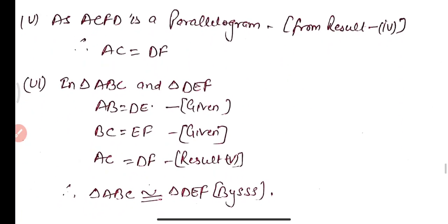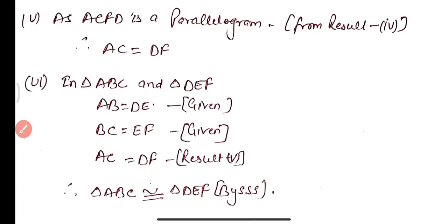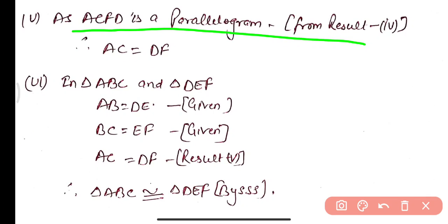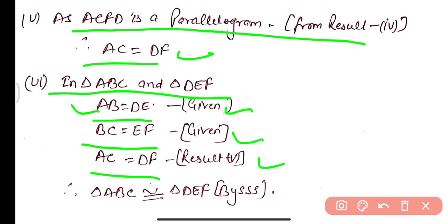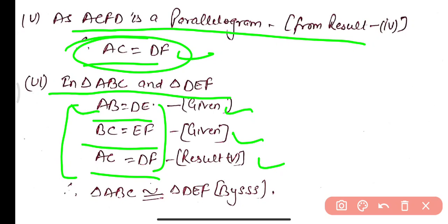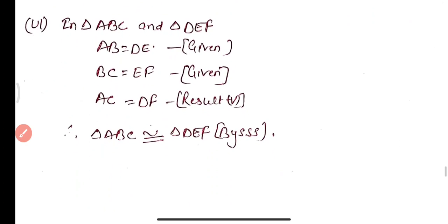Part 6: Since ACFD is a parallelogram, opposite sides are equal, so AC equals DF. In triangles ABC and DEF, AB equals DE, BC equals EF, and AC equals DF from result 5. Therefore triangle ABC is congruent to triangle DEF by Side-Side-Side congruency criteria.